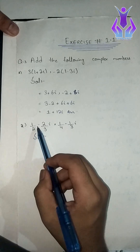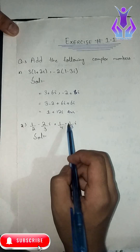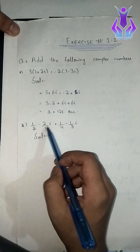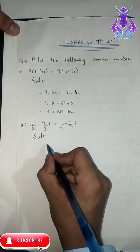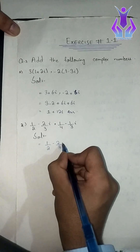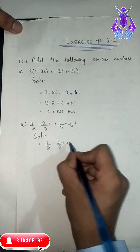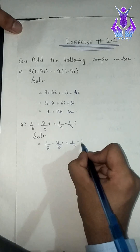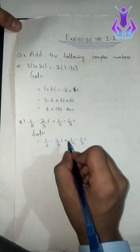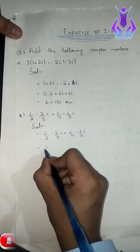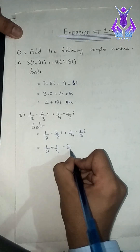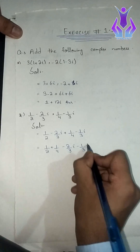The next part: 1 over 2 minus 2 over 3 iota, comma, 1 over 4 minus 1 over 3 iota. First, we will add the real and imaginary parts separately: 1 divided by 2 plus 1 divided by 4, minus 2 divided by 3 iota minus 1 divided by 3 iota.